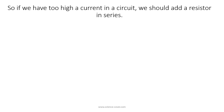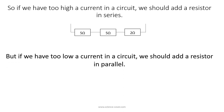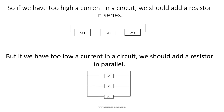In summary, if we have too high a current in the circuit we should add a resistor in series. This will increase the resistance of the circuit and lower the current. However, if we have too low a current in the circuit we should add a resistor in parallel. This will lower the total resistance of the circuit and increase the current.